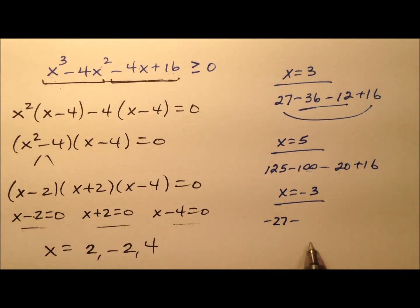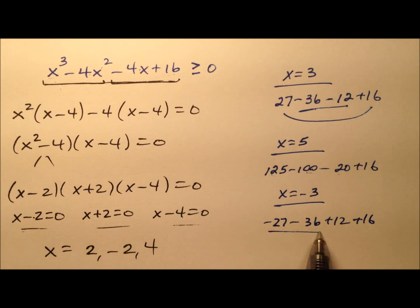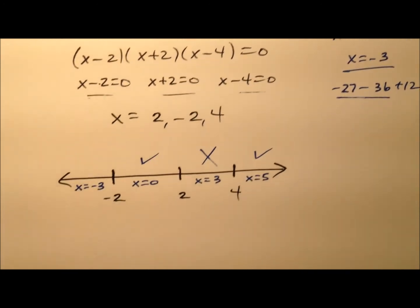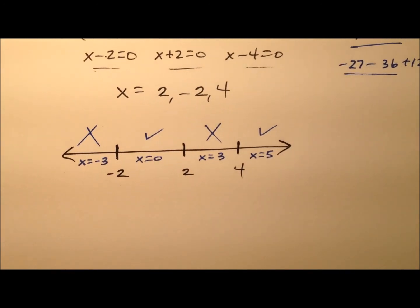So negative 27 minus 36 plus 12 plus 16. Now those negatives definitely are larger than those positives. So that guy's negative.